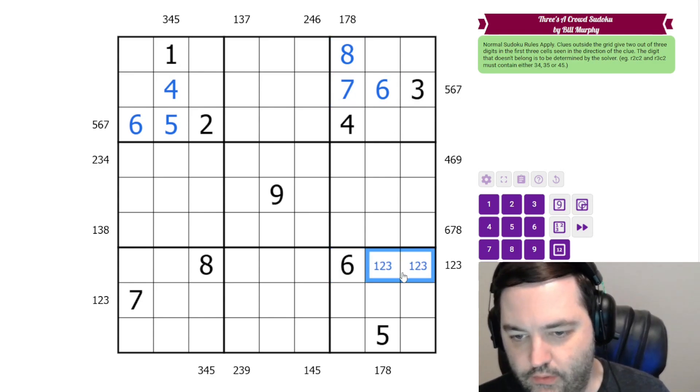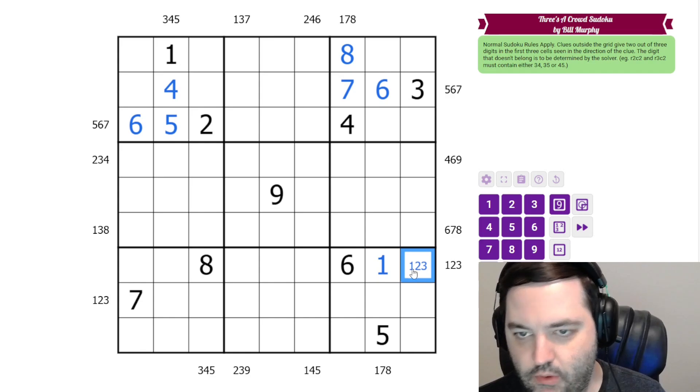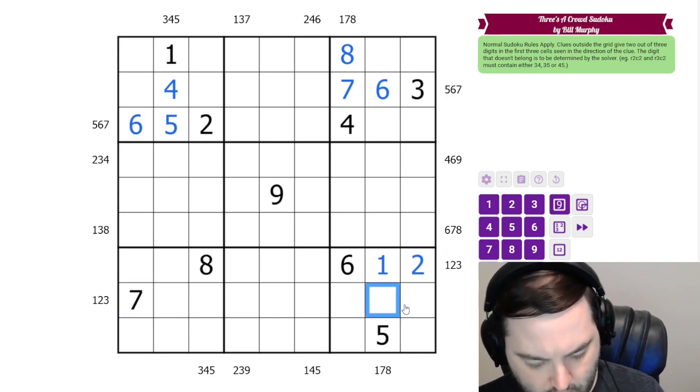Here we need one, two, and three. Here we need one, seven, and eight. One is the common digit. And again, we need these two cells to contain digits from one, seven, eight, and these two cells to contain digits from one, two, three. So that has to be one. This can't be a three, so it's two. This can't be a seven, so it's eight.